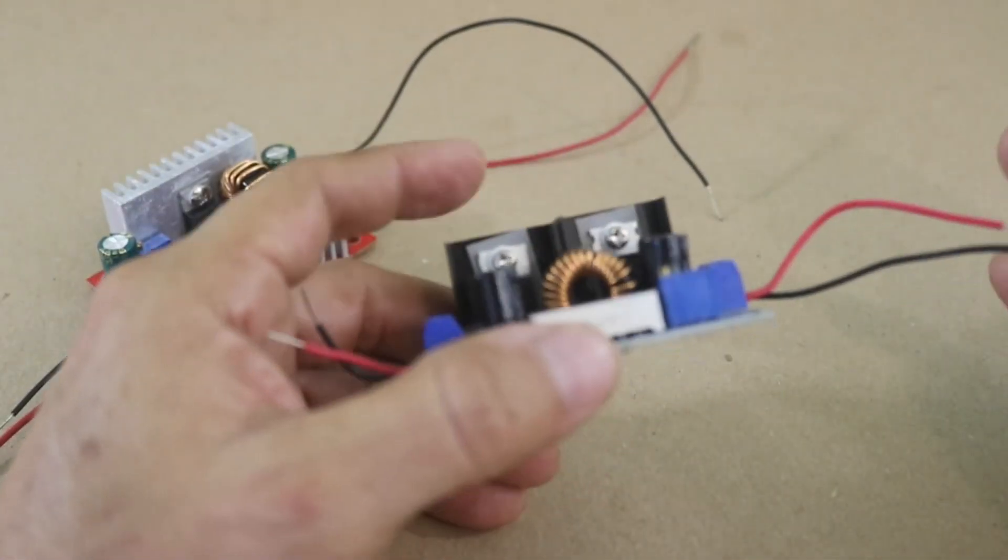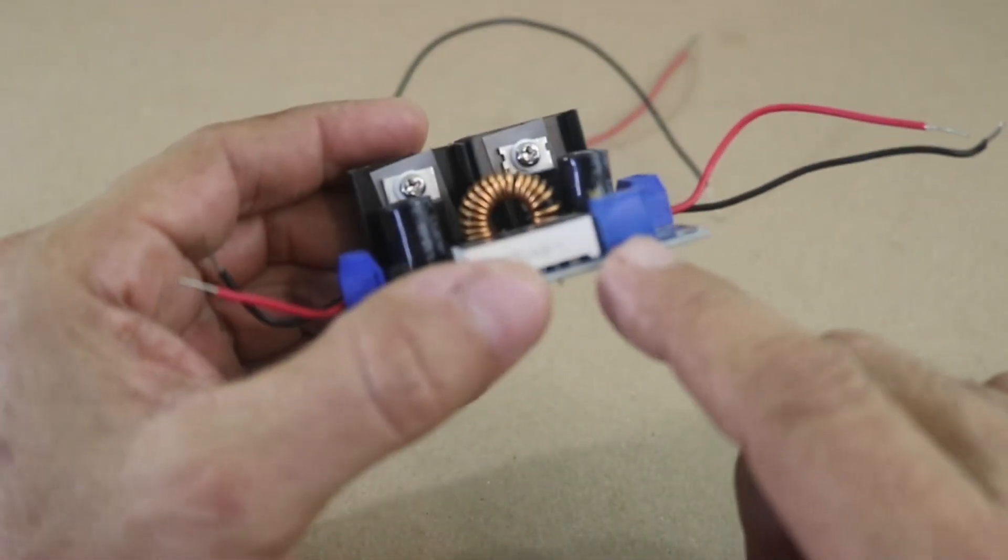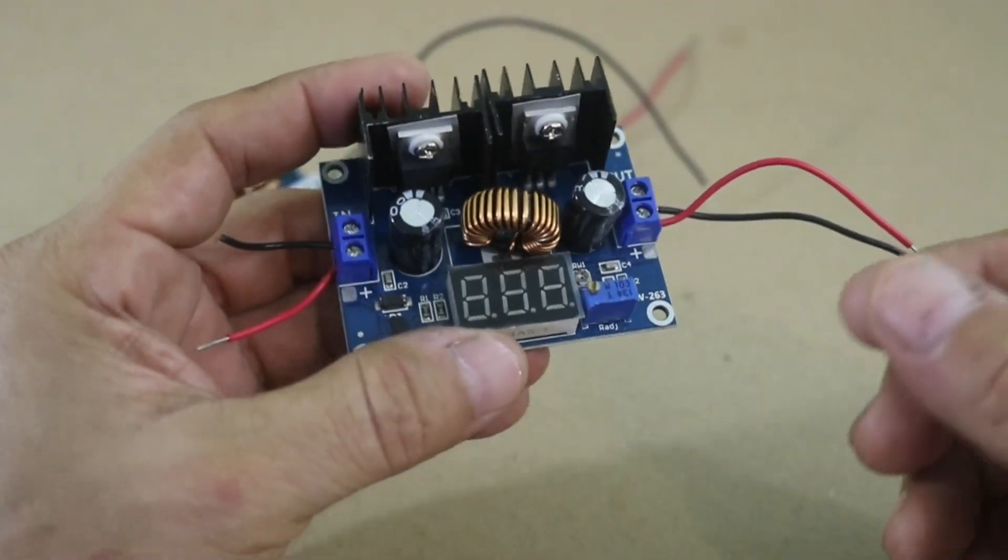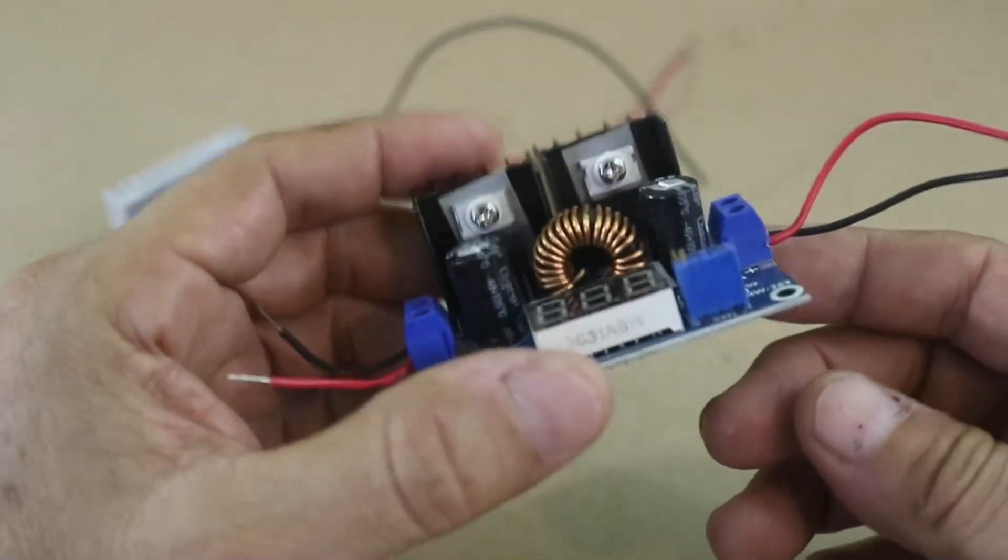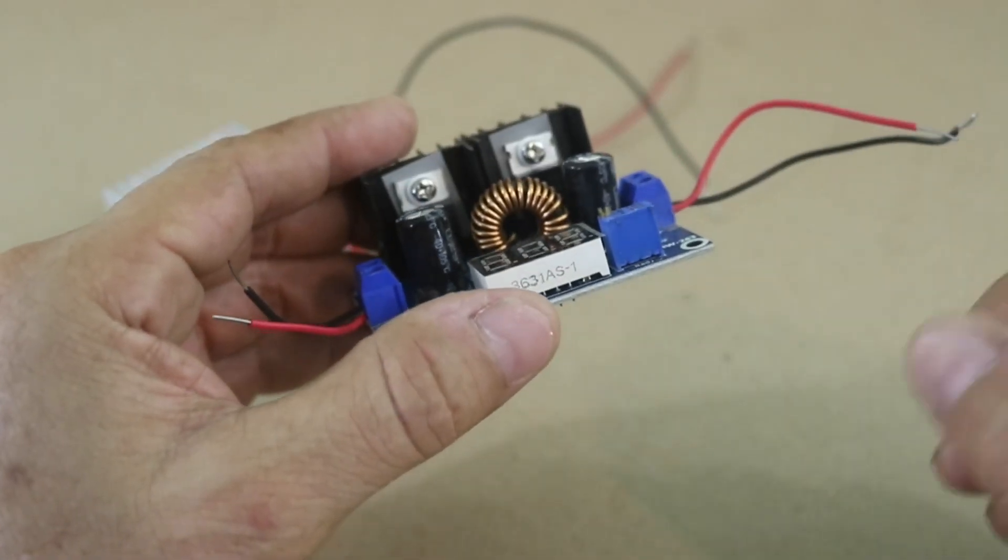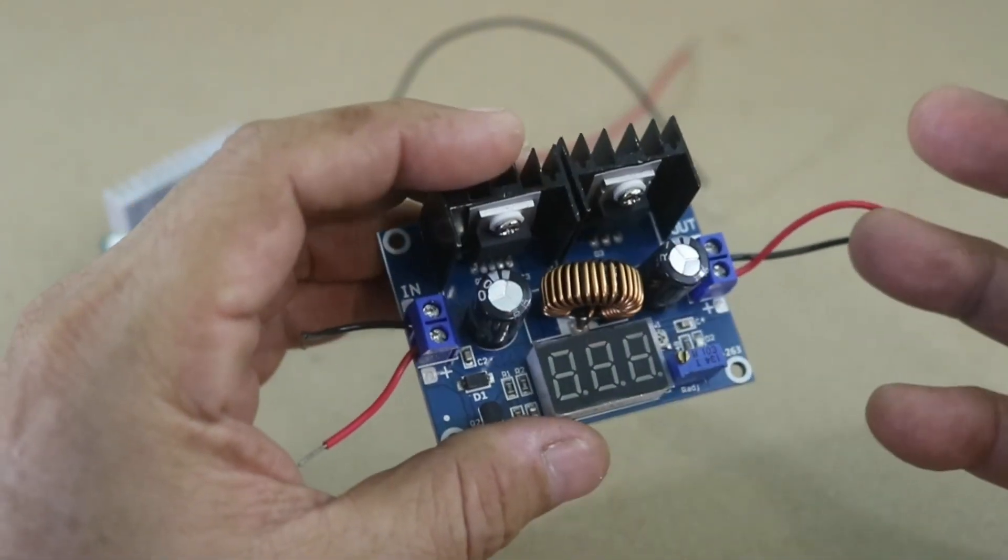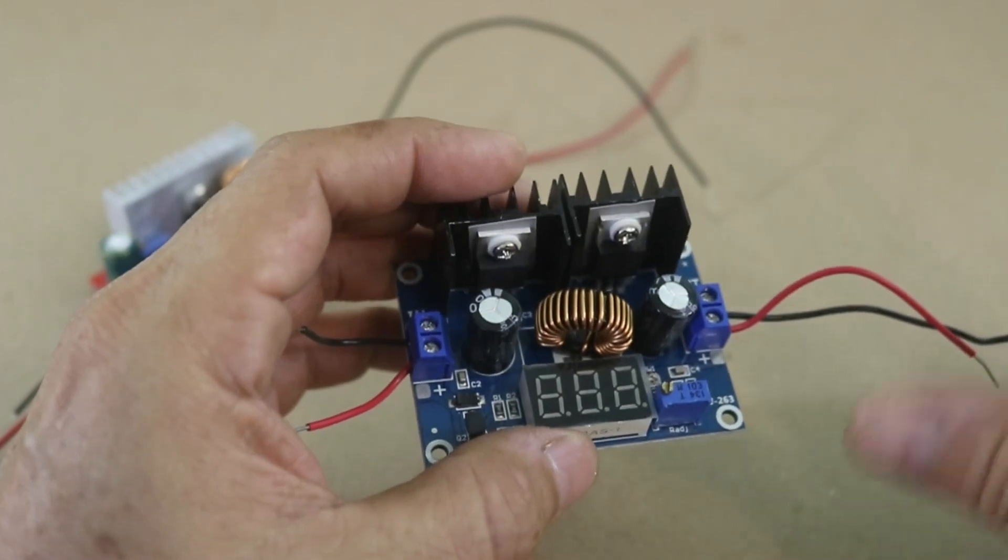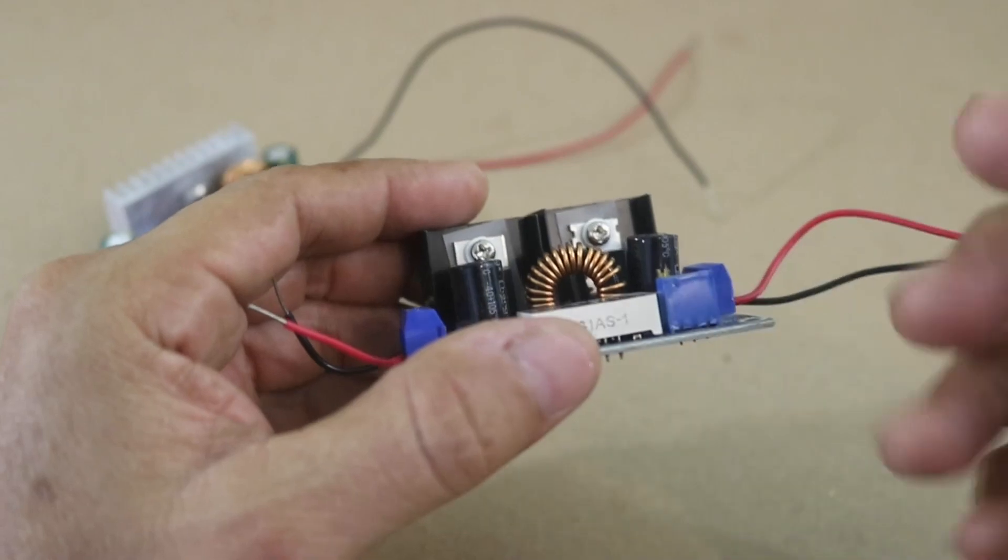However they have a problem and it is that in order to vary the voltage they have this type of potentiometer, it is a trimpot. So you need a small screwdriver and move here in order to adjust your voltage. Now that is not practical and the other problem is that this type of trimpot is not designed for moving continuously. It is designed to fix your voltage and leave it there for a long time. If you move continuously the trimpot it will be damaged shortly.